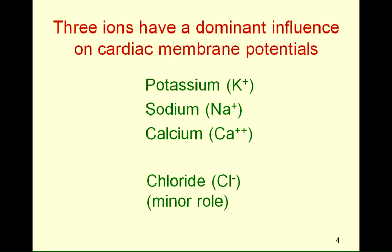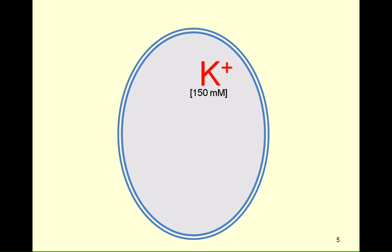Let's now see how potassium, sodium, and calcium contribute to the membrane potential. Looking at a resting non-pacemaker cardiac cell, of the three major ions, potassium has the highest intracellular concentration — about 150 millimolar. The potassium concentration on the outside is about 4 millimolar. Therefore, the concentration of potassium inside the cell is much greater than outside, a difference we term a concentration gradient or chemical gradient. Because the cell membrane is permeable to potassium, potassium ions want to diffuse out of the cell down the concentration gradient.